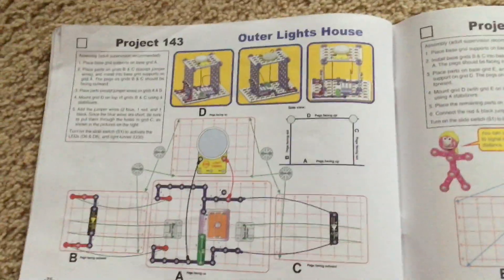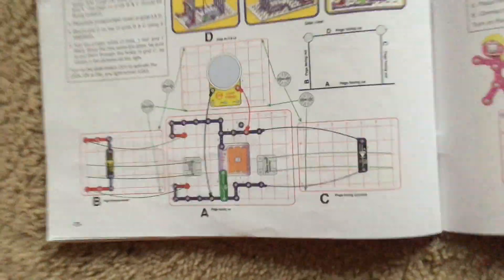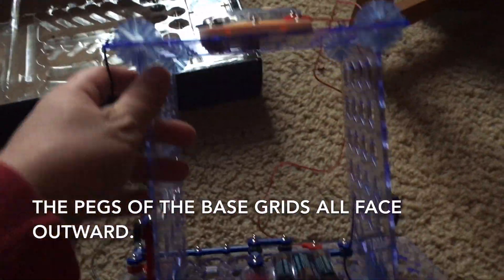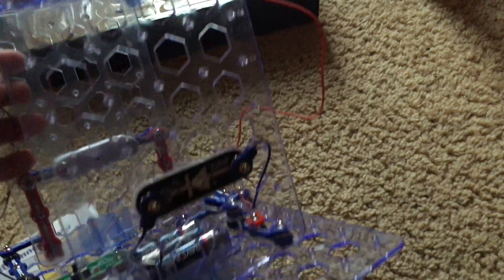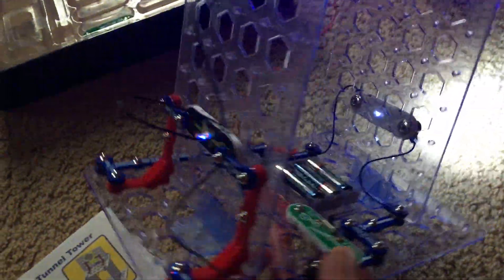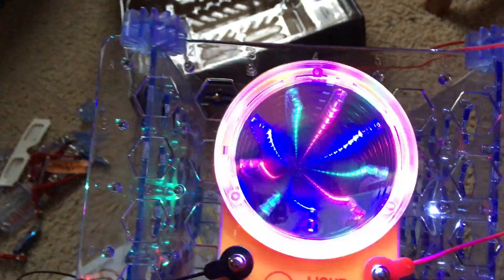Project 143, outer lights house. Using this circuit which includes three of the four smaller base grids, we will turn on the slide switch. Lights on the outside of the circuit come on and flash. We have the light tunnel which performs a show.